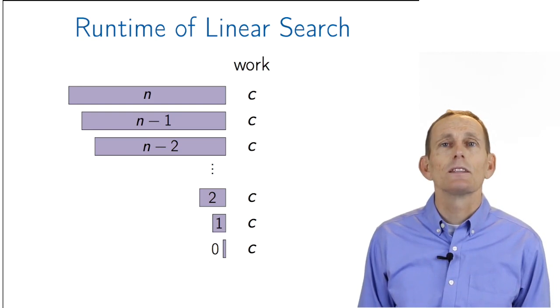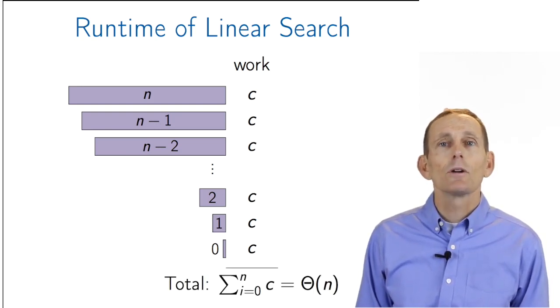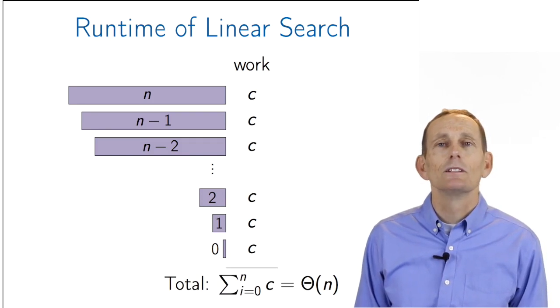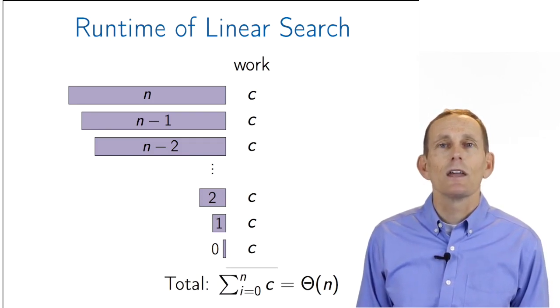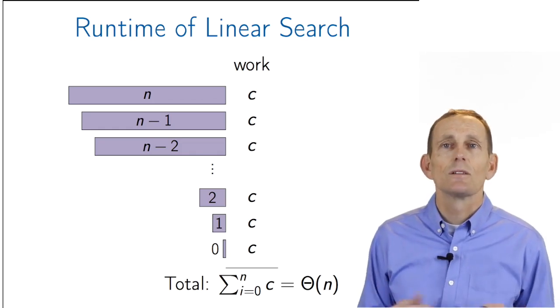Alternatively, we could have represented this constant amount of work with big theta of 1. The total work is just the sum of the work done at each level. That's a summation from 0 to n of a constant C, which is n plus 1 times C, or just big theta of n.